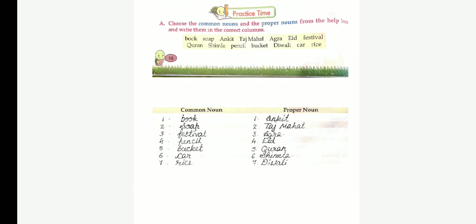Practice time. First one. Choose the common nouns and the proper nouns from the help box. Here, some common nouns are given and some proper nouns also are given. See, common nouns are book, shop, festival, pencil, bucket, car, rice. Proper nouns: Angit, Taj Mahal, Agra, Eid, Quran, Shimla, Diwali.